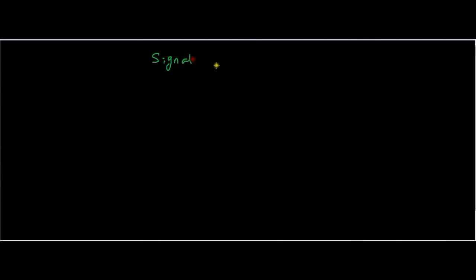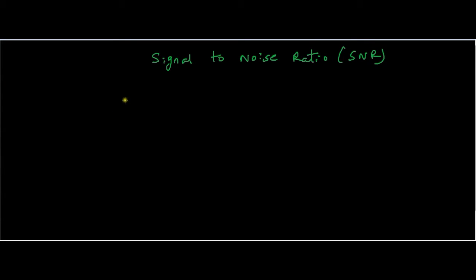Hello all, welcome to the new video. In this video we will discuss about signal to noise ratio. It is a popular measure which we use in communication systems. SNR is a measure that compares the level of desired signal to the level of background noise. SNR is equal to, in simple terms, the ratio of signal power to that of noise power.